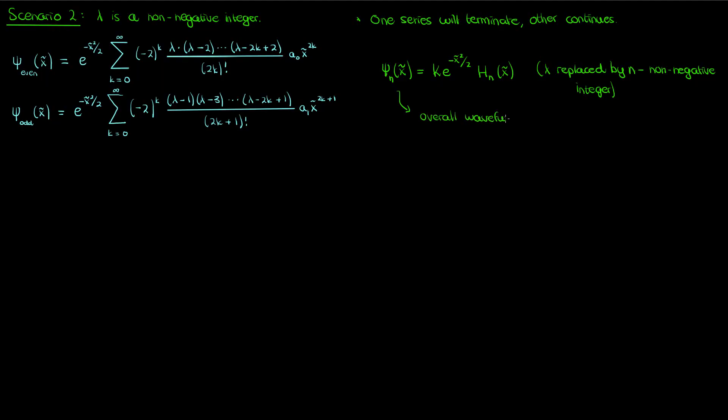The overall wave function that will be the solution for a particular harmonic oscillator will be a linear combination of these individual ψ sub n's.